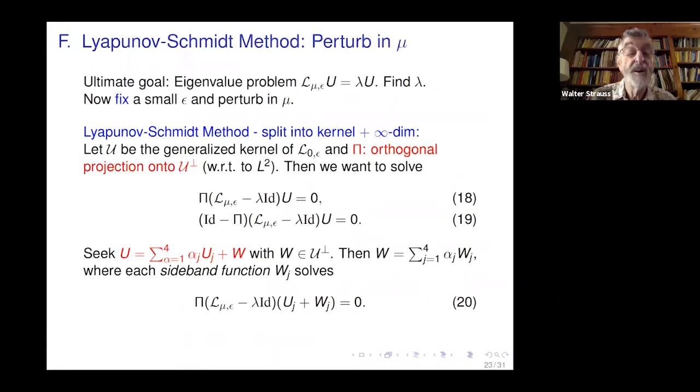That's when mu equals zero. Now we want mu not equal zero, because so far we've only had imaginary eigenvalues. We want a real part. So we use the Lyapunov-Schmidt method. We split into its four-dimensional kernel and an infinite dimensional other part. Pi is the projection on the infinite dimensional part. Here 18 is the infinite dimensional equation, 19 is four scalar equations.